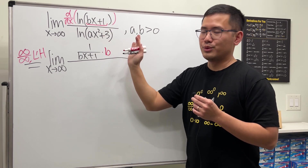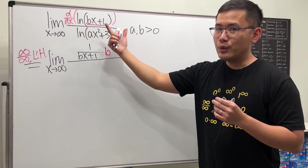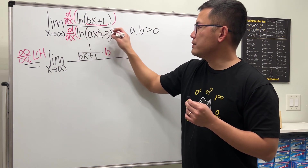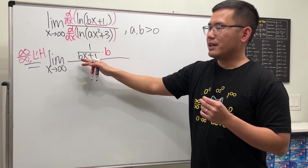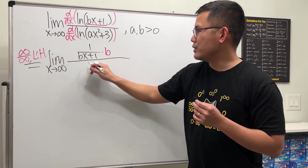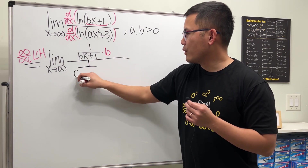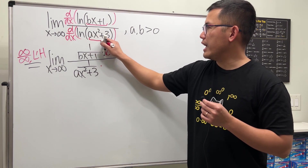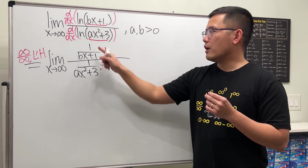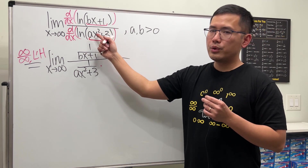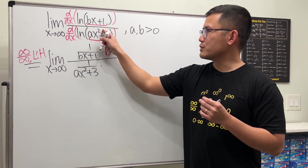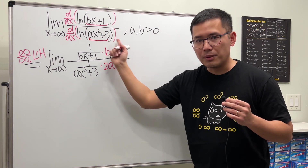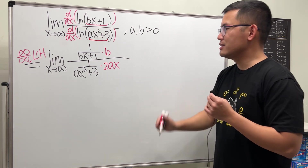The derivative of plus one is zero, so that's the numerator. For the bottom, the derivative of ln of whatever is one over that — so one over ax squared plus three — then by the chain rule multiply by the derivative of ax squared plus three: use the power rule, bring the two to the front to get 2ax, and the derivative of plus three is zero. So this is what we have.